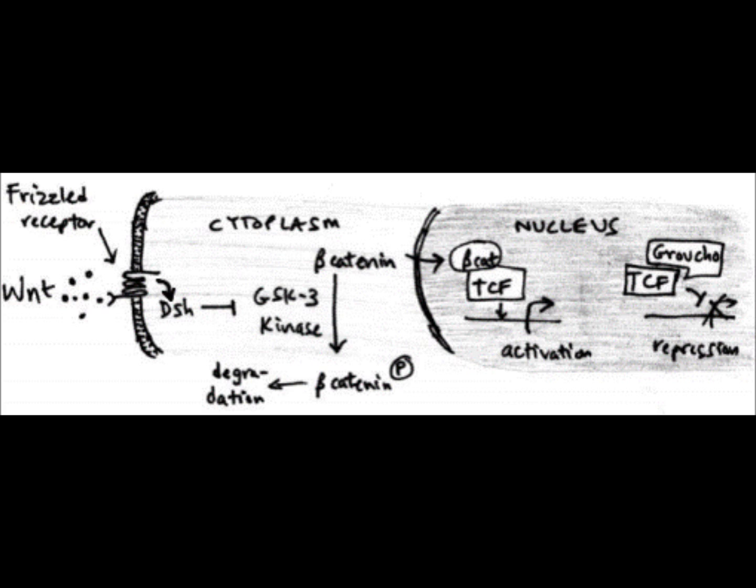Shown above is the general pathway of Wnt signaling which begins with Wnt ligand or some sort of ligand binding to the frizzled receptor on the cellular membrane. This activates a protein called disheveled. The activity of disheveled is to block the activity of GSK3 kinase in the cytoplasm.